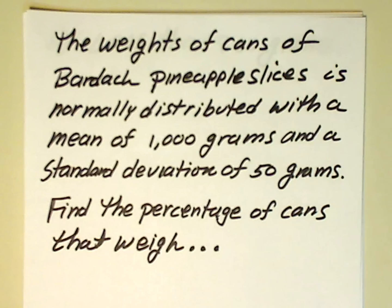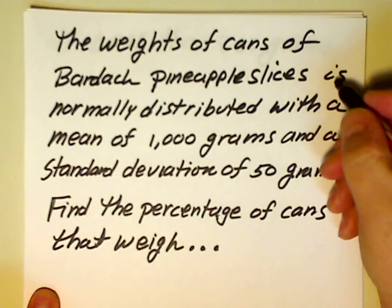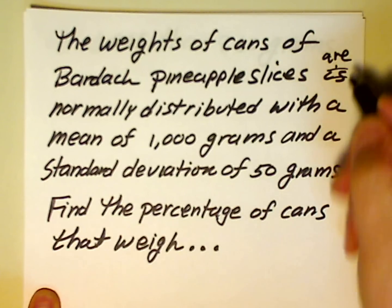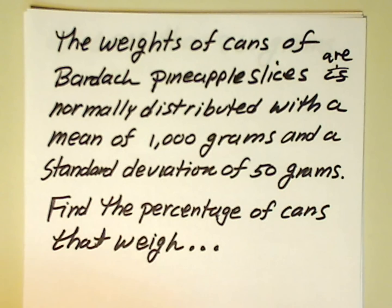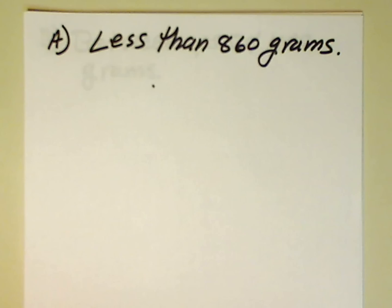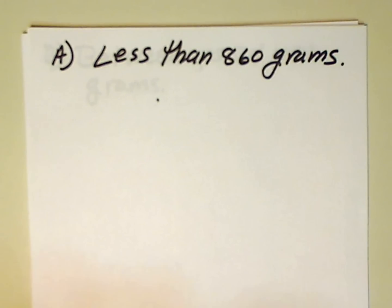So here's this particular problem. The weights of cans of Bardak pineapple slices, actually that should be R, are normally distributed, with a mean of a thousand grams and a standard deviation of 50 grams. Find the percentage of cans that weigh less than 860 grams.